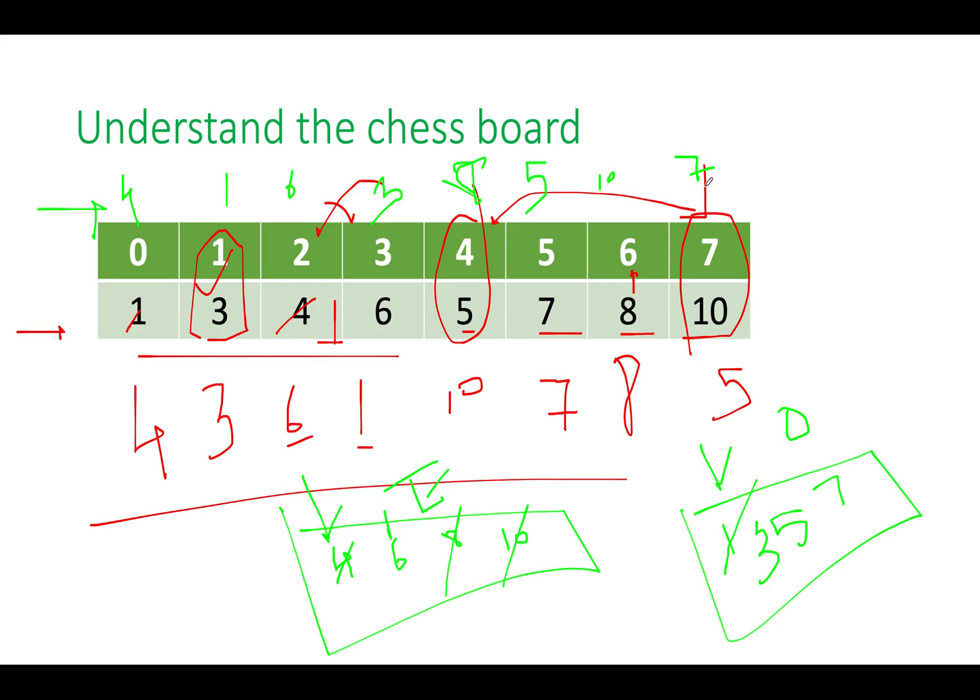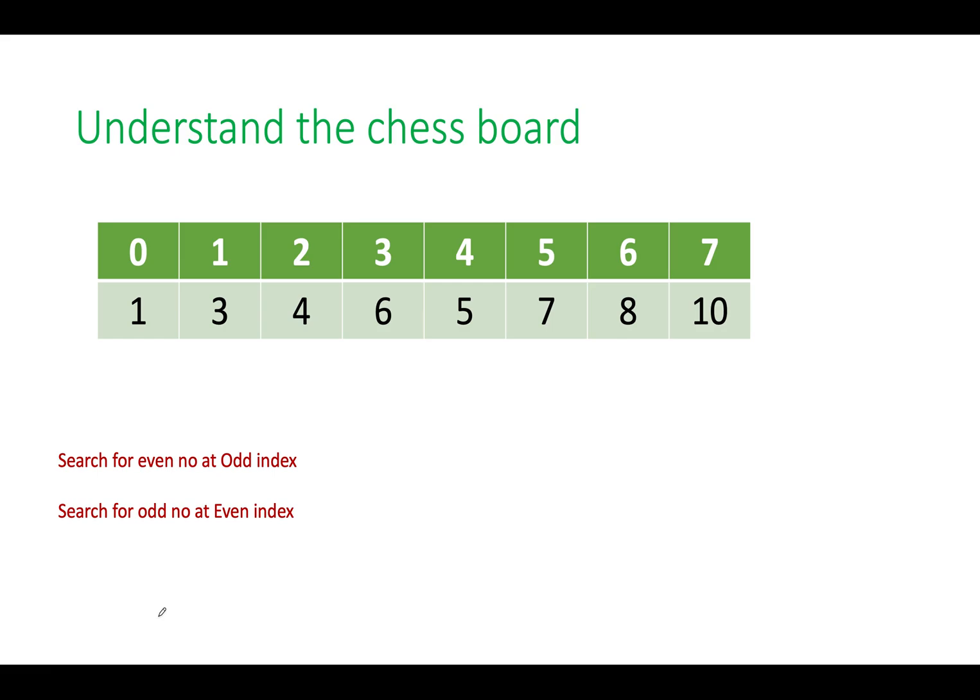So the other possibility of answer is something like this: 4, 1, 6, 3, 8, 5, 10, 7 and this is another acceptable answer. The time complexity of this approach is order of n while the space complexity is again order of n because you are bucketizing all the elements into even numbers versus odd numbers. Can we improvise on this? The answer is yes.